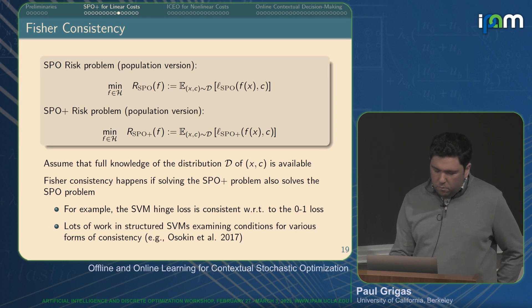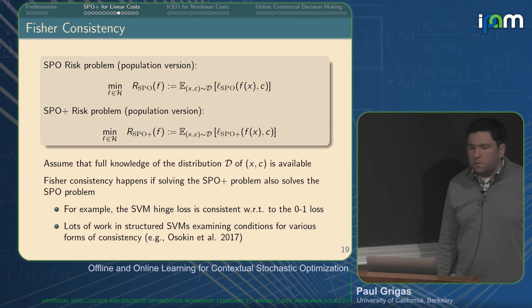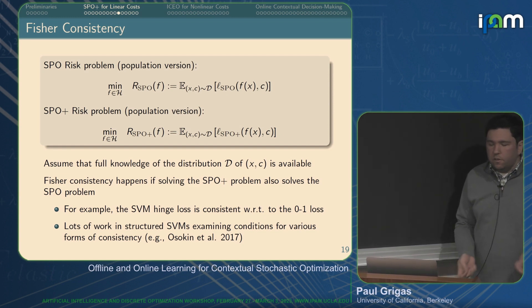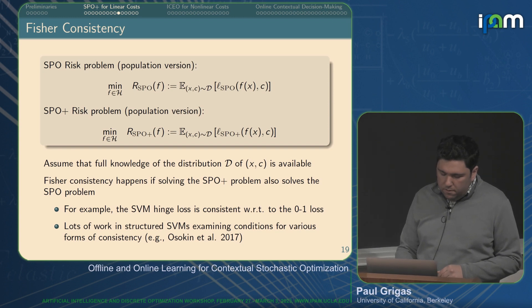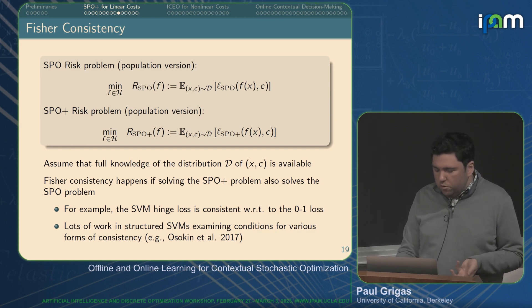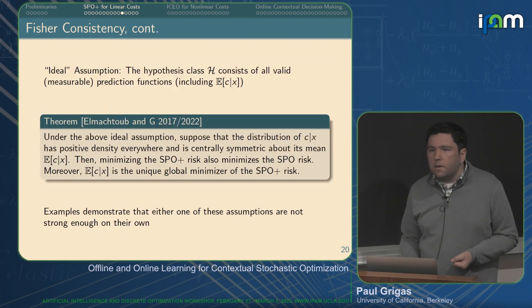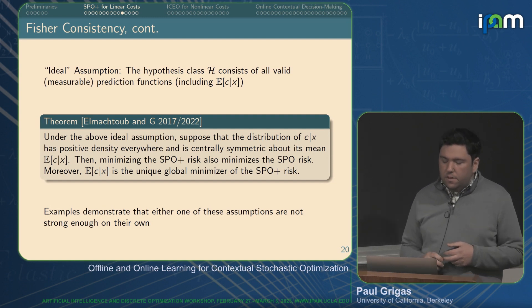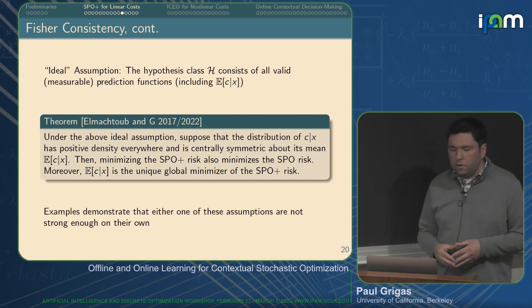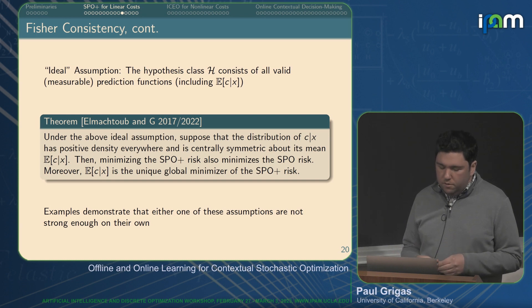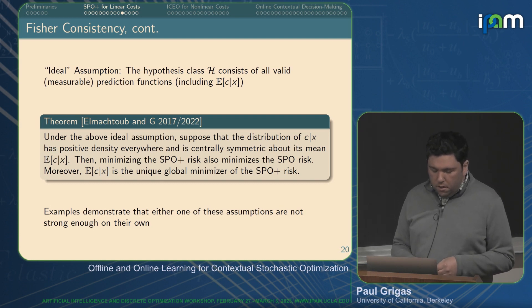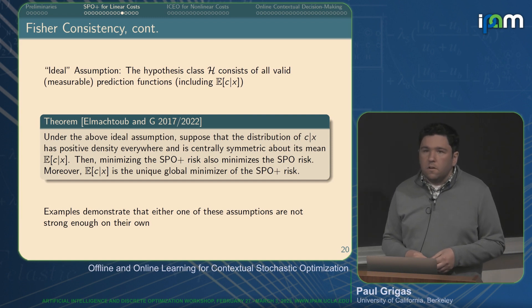In terms of theory, we developed a notion of Fisher consistency. Consistency questions ask: if you solve the problem with the surrogate loss, do you actually recover the answer for the original loss? Fisher consistency is the most basic version, assuming the distribution of data is totally available. We demonstrate sufficient conditions to guarantee it: the hypothesis class includes the true regression function, and the conditional distribution of c given x has a positive density everywhere and is centrally symmetric. Both conditions are needed — we have counterexamples showing you may not learn the correct answer if either is violated.